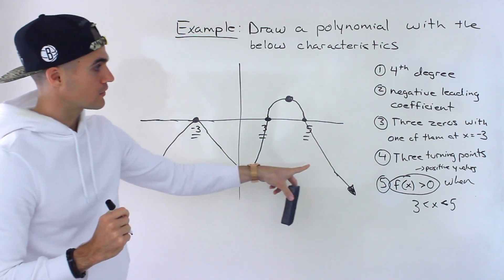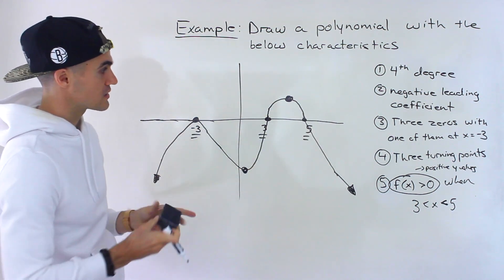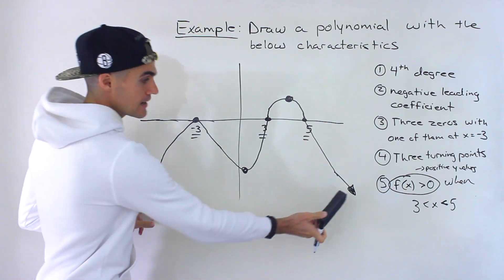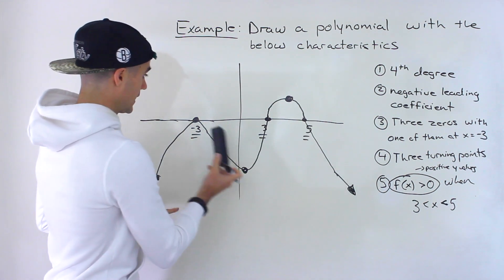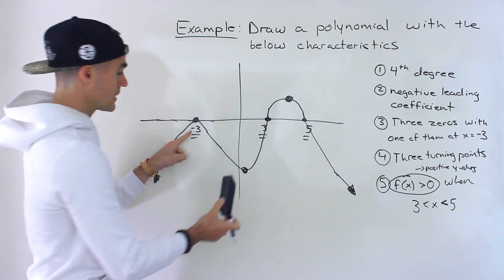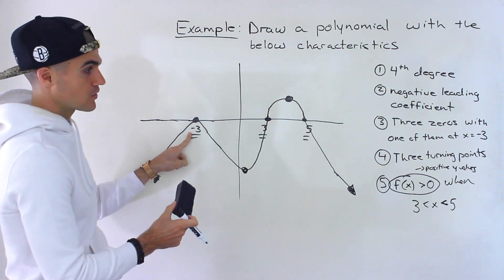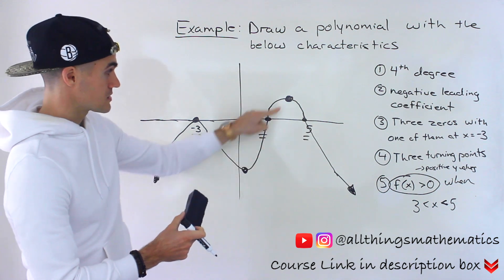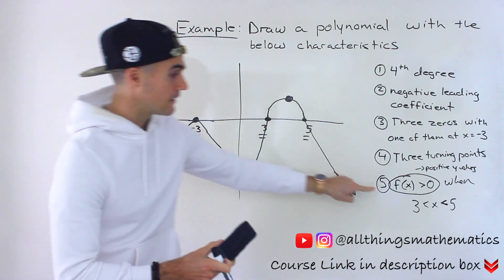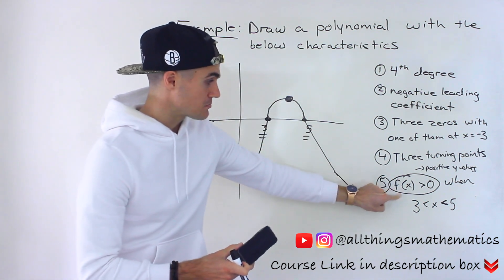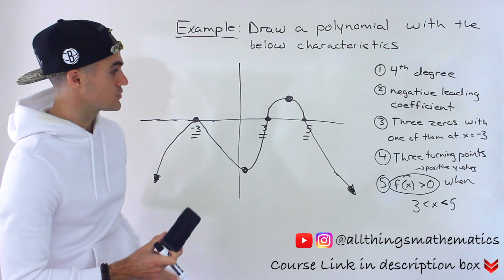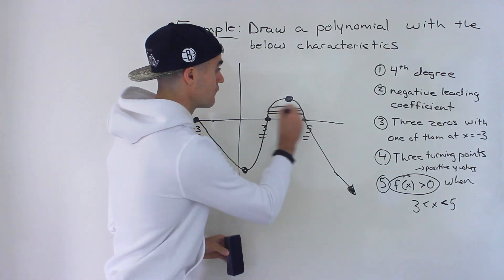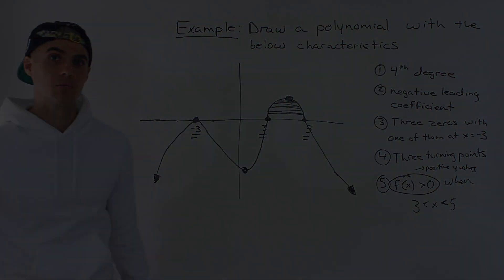You want to go through all the characteristics once you have your final drawing. Is it a fourth degree? Yes, it is. Negative leading coefficient? Yes, because of the end behaviors. It has three zeros, one of them at negative three. There are three turning points. And the function is positive when x is between three and five, meaning the y values there are positive.